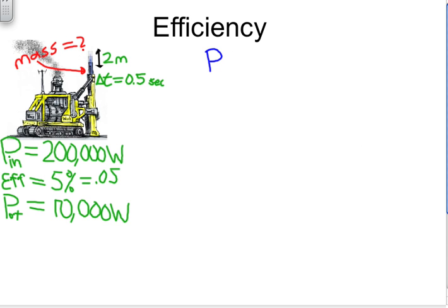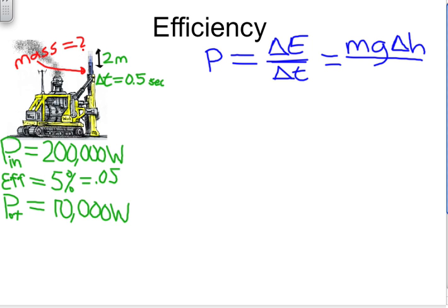Change in energy over change in time. So, we know what the change of energy is. It's the change in the potential energy. So that's mg change in height because the mass and the acceleration of gravity stay constant. So it's just the change in height that's changing the energy. The time that it takes to do this is 0.5 seconds.